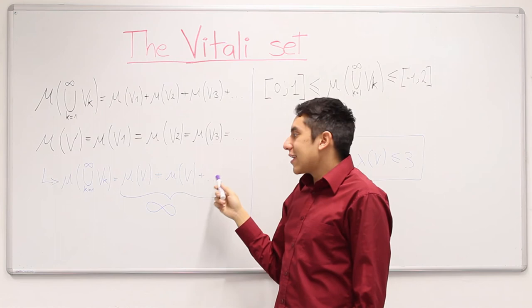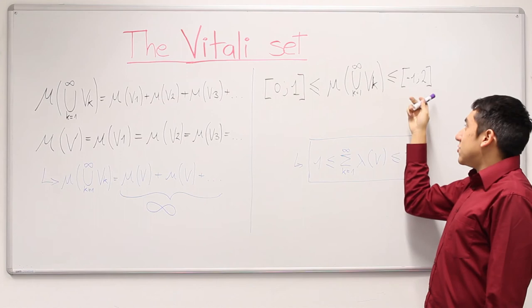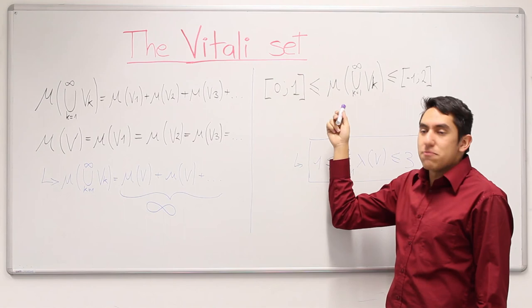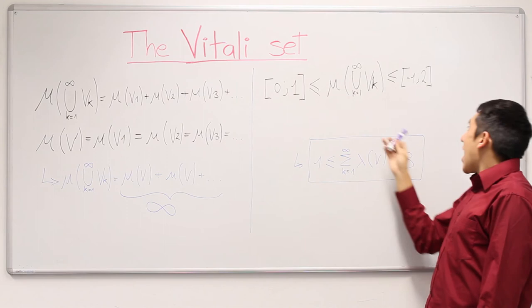As we saw before, the union of the translated sets were within the interval minus 1 and 2, so it has to be smaller. But at the same time, the Vitali set was taken from the real numbers between 0 and 1, so it has to be bigger. Applying the Lebesgue measure and these properties, we derive that the length function of the Vitali set has to be between 1 and 3.